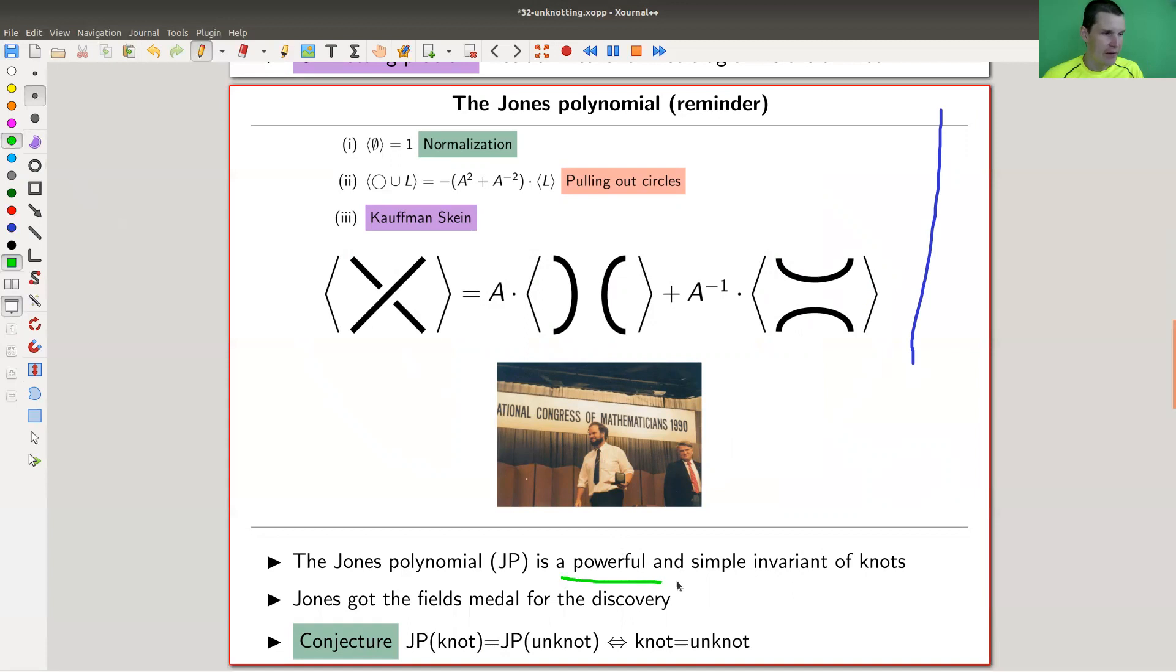It's really great. So Jones, here's the picture from 1990. This one here is Jones. He got the Fields Medal, the highest prize in mathematics for this discovery. It's ridiculous. It's really fantastic.